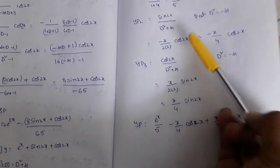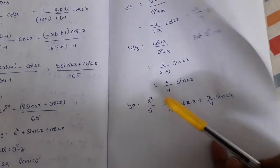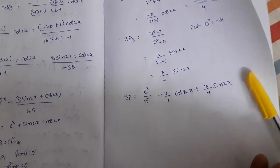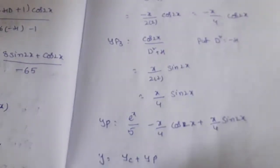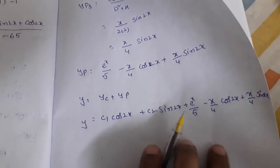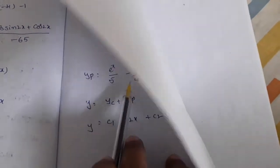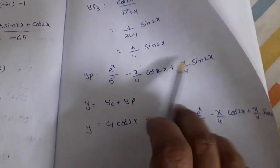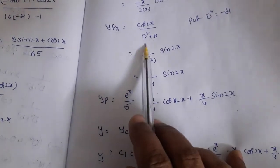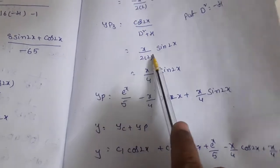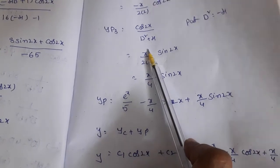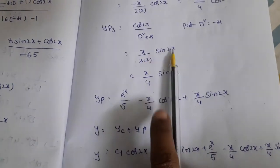Combining yp1, yp2, and yp3: yp = eˣ/5 − (x/4)cos(2x) + (x/4)sin(2x). The general solution is y = yc + yp = c₁cos(2x) + c₂sin(2x) + eˣ/5 − (x/4)cos(2x) + (x/4)sin(2x). We apply the special formula only when the denominator becomes 0 upon substituting D²=−b²; otherwise, directly substitute D²=−b² and leave D as is.